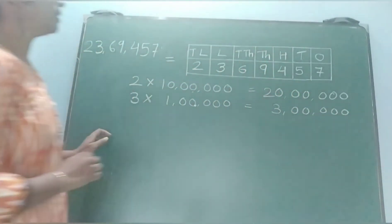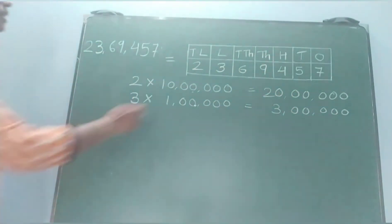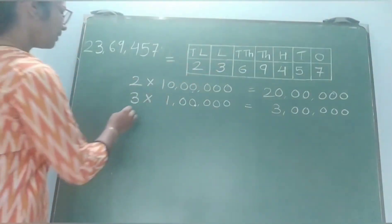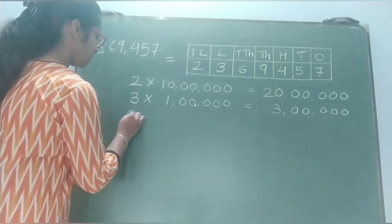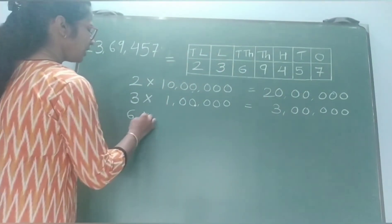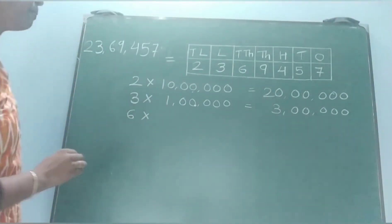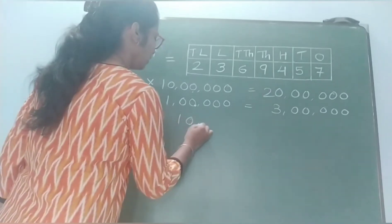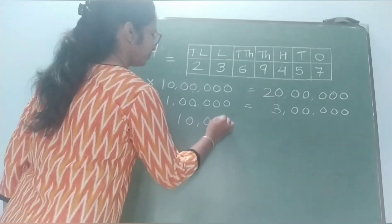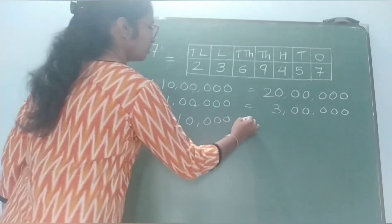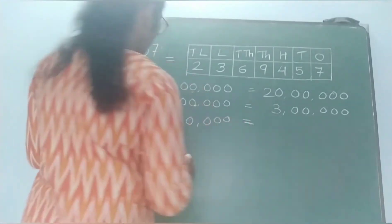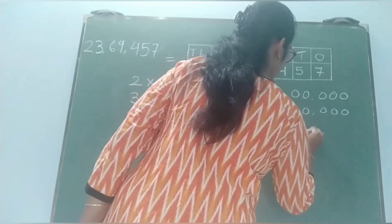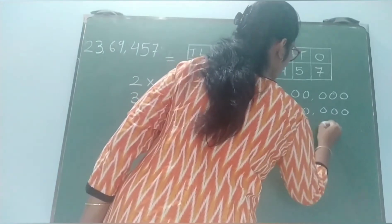Now see the next number. 6 is in the 10 thousands place, so 6 gets multiplied by 10 thousand. So the value of 6 is 60 thousand.